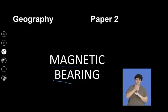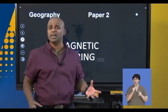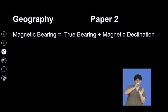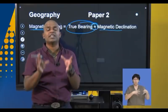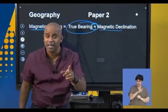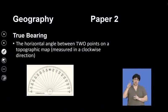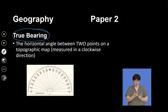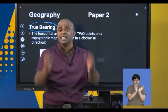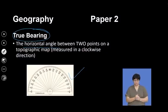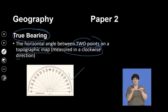The next calculation is magnetic bearing. The formula is: Magnetic Bearing = True Bearing + Magnetic Declination. Note the plus sign never changes — it is a given formula. A protractor is used to measure the true bearing: the horizontal angle between two points on a topographic map, measured in a clockwise direction. When the second point lies to the right, the protractor faces east; when the point is to the west, the protractor faces west.